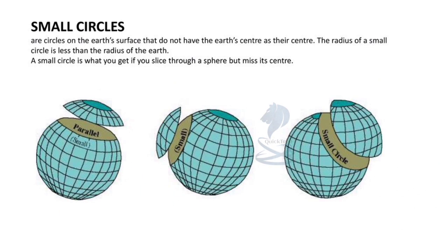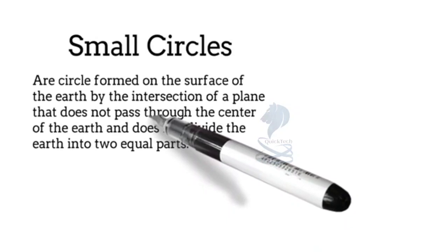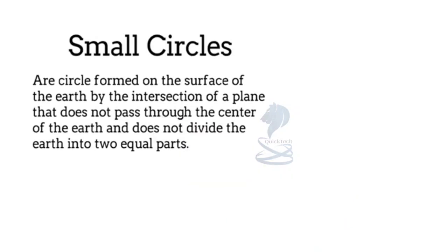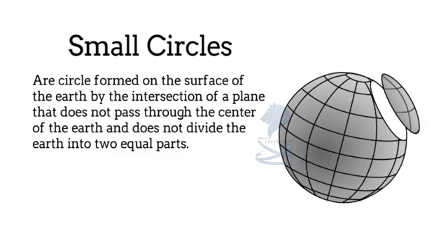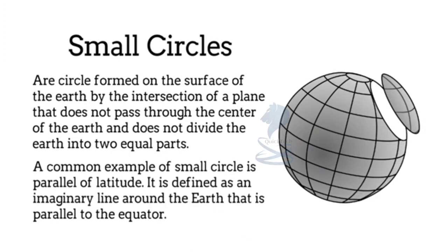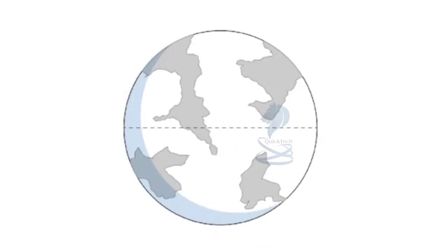Now let's discuss small circles. Small circles are circles formed on the surface of the earth by the intersection of a plane that does not pass through the center of the earth and does not divide the earth into two equal parts. A common example of a small circle is a parallel of latitude, defined as an imaginary line around the earth that is parallel to the equator.